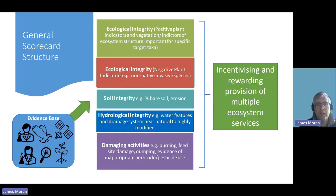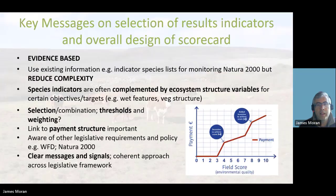As seen in this module, the general scorecard structure is a multi-criteria assessment of ecological condition for the delivery of bundles of ecosystem services, utilising a range of results indicators. In designing a scoring system, it is crucial that the selection of results indicators is evidence-based. For plant species selection, extensive use is made of existing monitoring and research programmes where plant species present in a range of semi-natural habitats of varying ecological condition are recorded.